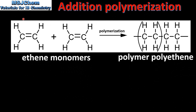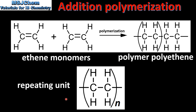Finally, alkenes undergo addition polymerization. Here we have two ethene molecules, known as monomers, reacting together to form a polymer which is polyethene. Polymers can be represented by a repeating unit — here we have the repeating unit for polyethene.